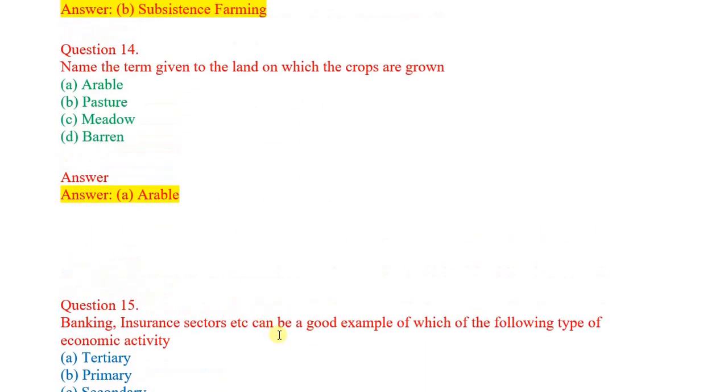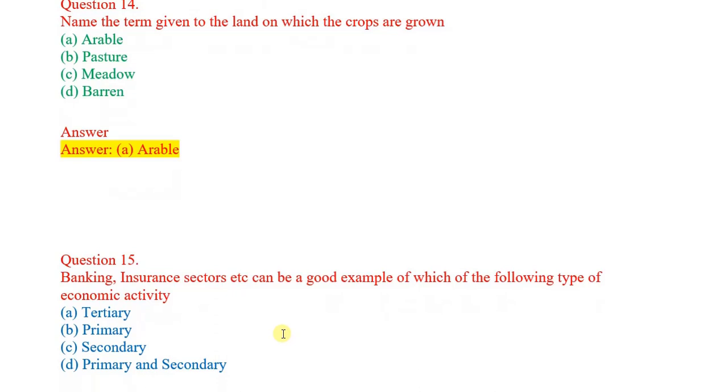Question number 15: Banking, insurance sectors can be a good example of which of the following type of economic activity? Options: tertiary, primary, secondary, primary and secondary. Correct answer: tertiary.